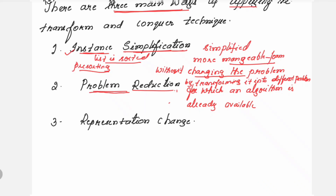There is one more way of applying the transform and conquer approach, called problem reduction. In problem reduction, you transform the problem into a different problem for which an algorithm is already available. The problem is difficult to solve directly, so you transform it into a different problem and find an existing algorithm for it.